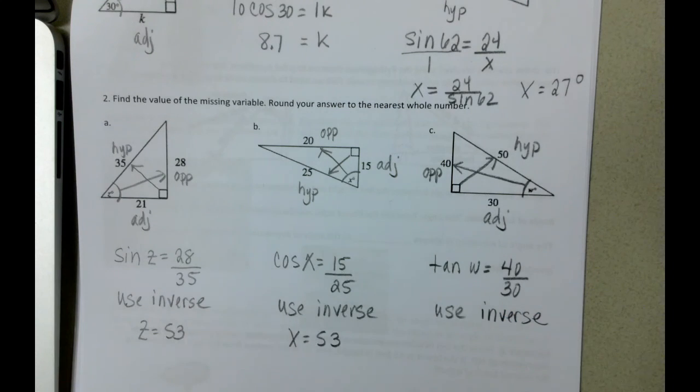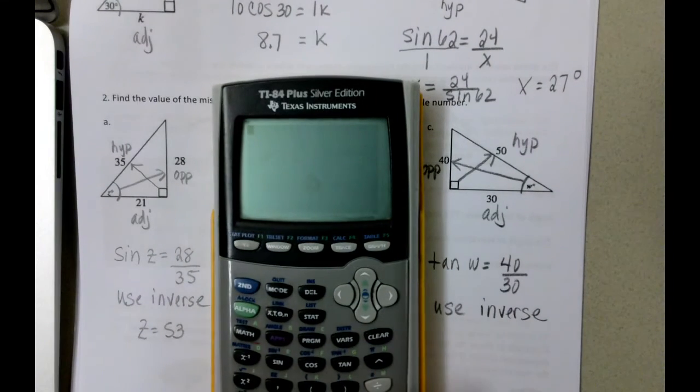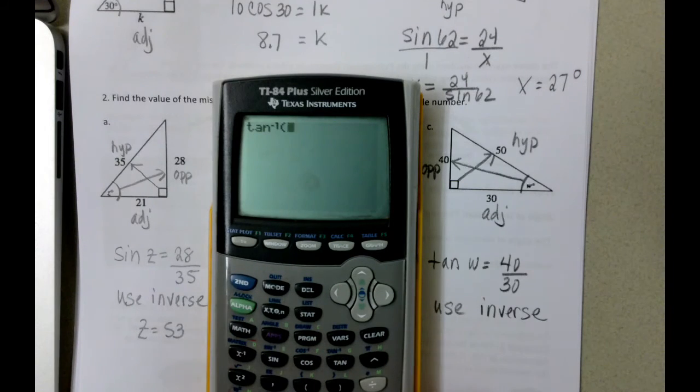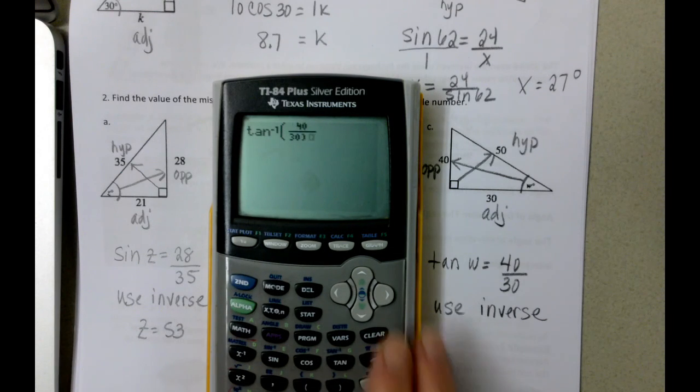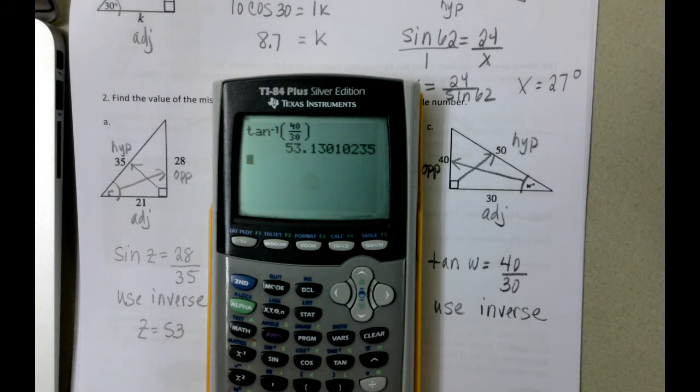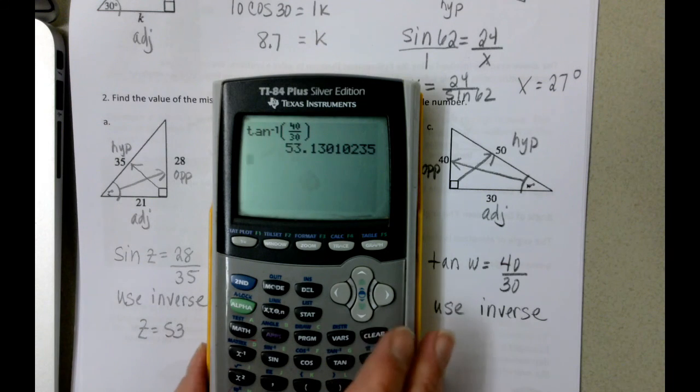So we're going to type it in. And when we type it in, there's the inverse button. And then it's going to be 40 over 30. And what do you know? We end up with the same value one last time because 53.1 is going to round to be 53.